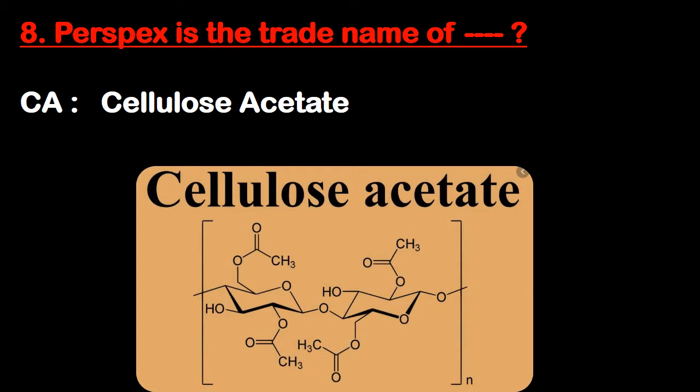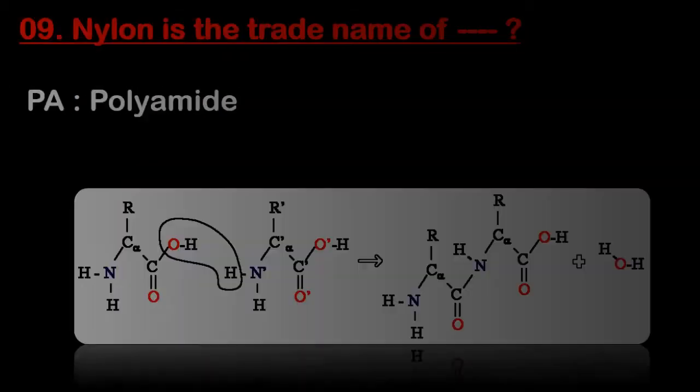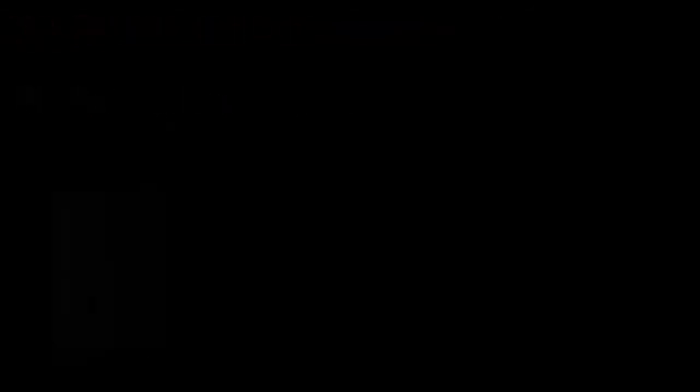Question number eight: perspex is the trade name of CA, means cellulose acetate. Nylon is the trade name of PA, means polyamide. Question number ten: delrin is the trade name of POM, polyoxymethylene.